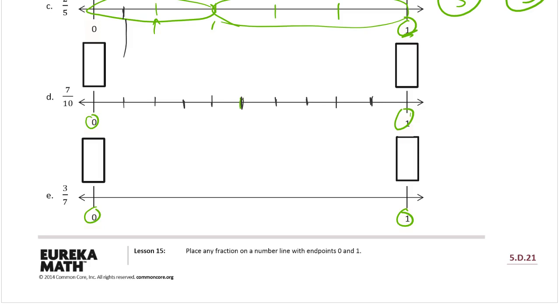So let's see, 7 tenths. This is going to be 0 tenths, and this is going to be 10 tenths. 1, 2, 3, 4, 5, 6, 7. So this is going to be the 7 tenths. And then we need 1, 2, 3 more tenths to get the rest of the way, because 7 plus 3 is 10. So 1 whole is 3 tenths plus 7 tenths.